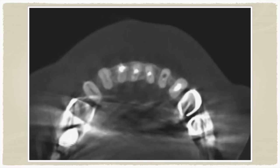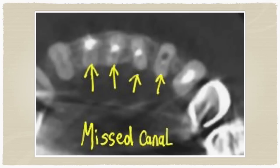On the axial section, all four incisors have root canal fillings. On the three on the left, the lingual canal has been missed. The one on the right — the right lateral incisor — it is the buccal canal that has been missed and the lingual has been filled. So in each tooth, one canal has been missed, which explains the source of the persistent infection and the problem associated with these teeth.